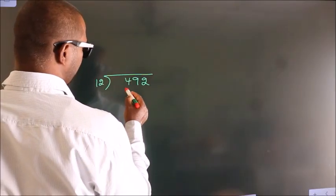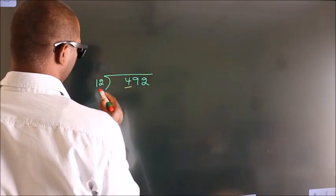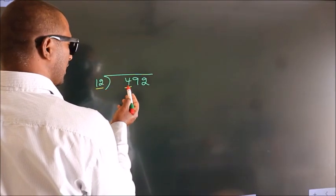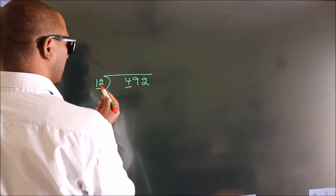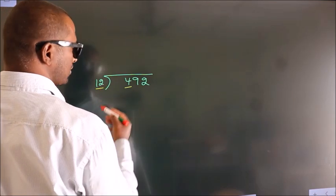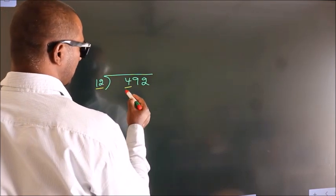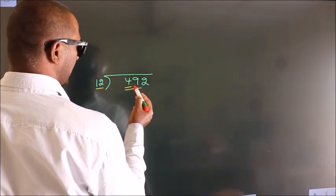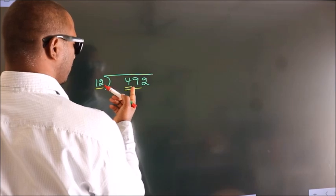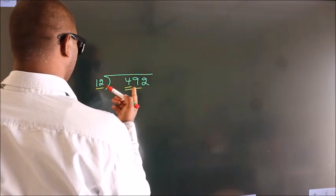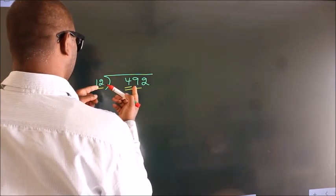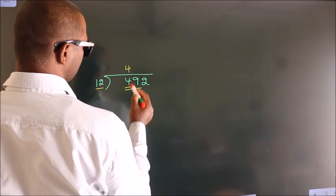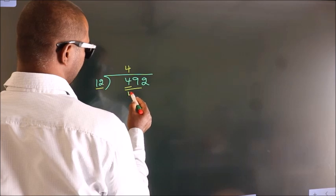Here we have 4. Here 12. 4 is smaller than 12, so we should take two numbers: 49. A number close to 49 in the 12 times table is 12 fours, 48.